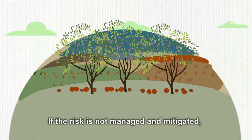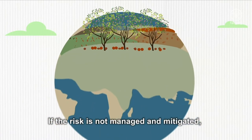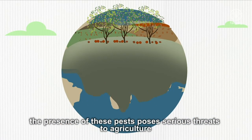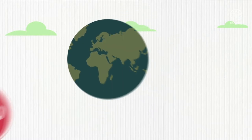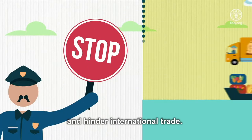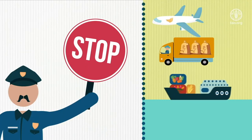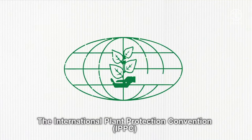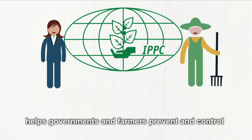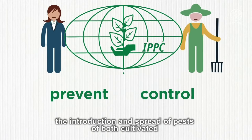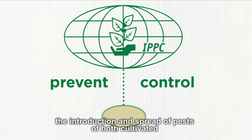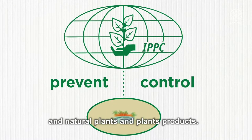If the risk is not managed and mitigated, the presence of these pests poses serious threats to agriculture and hinders international trade. The International Plant Protection Convention helps governments and farmers prevent and control the introduction and spread of pests of both cultivated and natural plants and plant products.